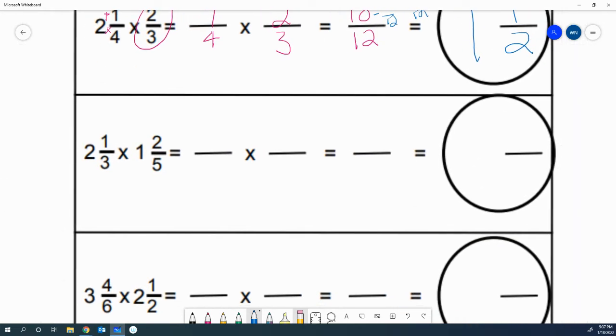Next problem. 2 and 1 third times 1 and 2 fifths. So first things first, we're going to go ahead and turn these mixed numbers into improper fractions. 2 times 3 is 6 plus 1 is 7 over 3. 1 times 5 is 5 plus 2 is 7 over 5.